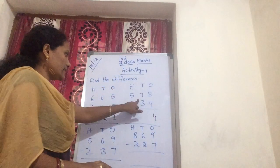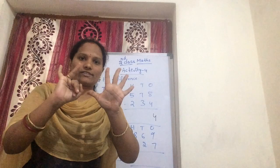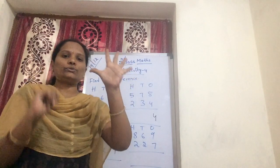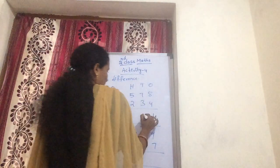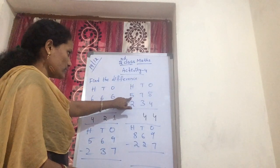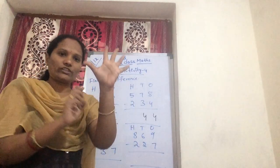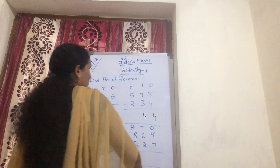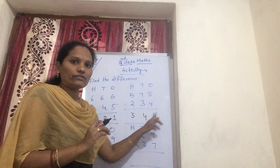Now coming from tens. In tens you get 3. You should write in hundreds. So what is your answer? 344.